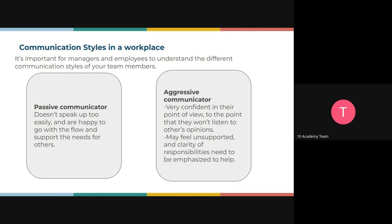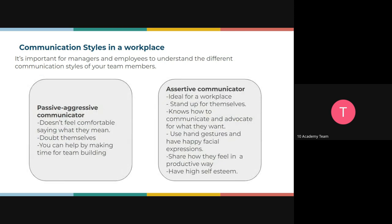The passive-aggressive communicator is someone who is sort of attacking but not being overtly aggressive about it — the aggression is subtle. They don't feel comfortable saying what they mean, so they beat around the bush instead of hitting the nail on the head. Most times they doubt themselves. You can help them by making time for team building so they feel more comfortable sharing their opinion.